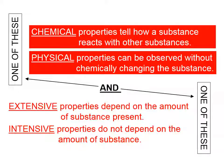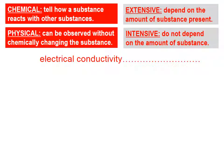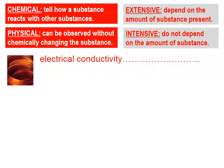Let's do a few examples. We're going to look at some properties and classify them as either chemical or physical, and then additionally as either extensive or intensive. Let's take electrical conductivity — copper wire conducting electricity, for example. Electrical conductivity can be observed without chemically changing the substance, so electrical conductivity is a physical property.